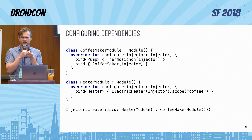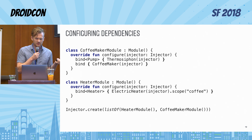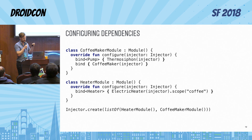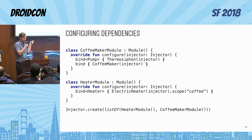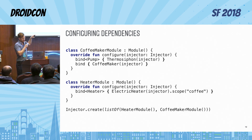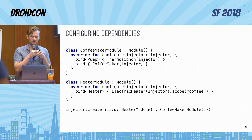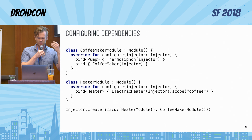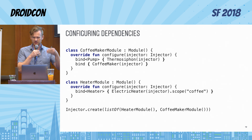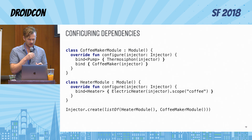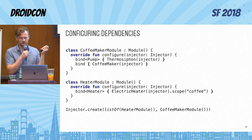So how does injector actually resolve dependencies? Dependency resolution happens in classes called modules. Here I have a couple of modules: one module for our coffee maker that specifies how the pump instance and the coffee maker itself need to be created. The important detail in the second module is that for the heater we specify a scope. When you specify a scope it means that when we resolve a heater we will cache it for the existence of that scope. While that scope is active, injector will keep returning the same instance of the heater. The last line is basically how you supply your modules to injector.